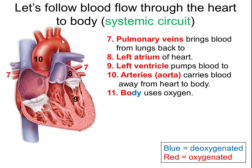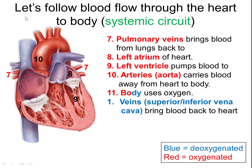When the blood goes to the body, the body uses up the oxygen. Therefore, the blood goes from oxygenated red to deoxygenated blue. It then returns to the heart through the superior or inferior vena cava, and the cycle repeats.